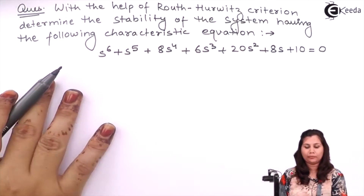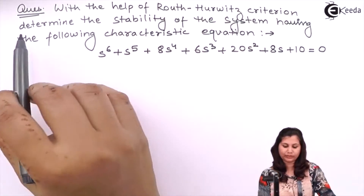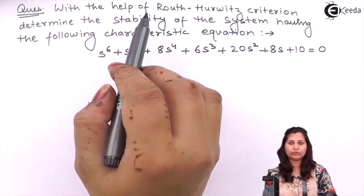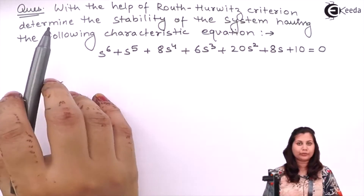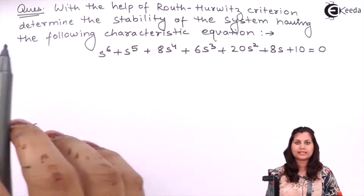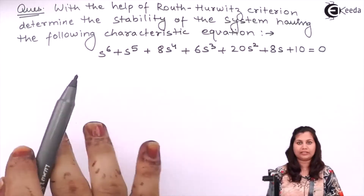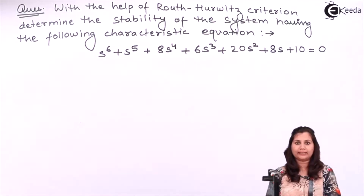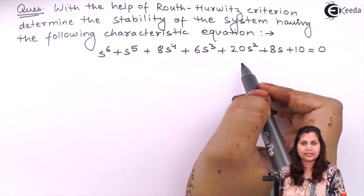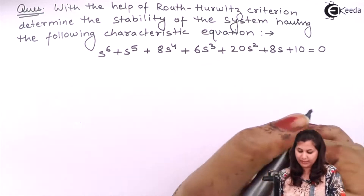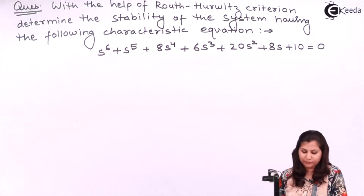So this is our problem, and it is given to us that with the help of Routh-Hurwitz criteria, we have to determine the stability of the system which is having the following characteristic equation. So this is the characteristic equation of the system. Let's solve this problem.